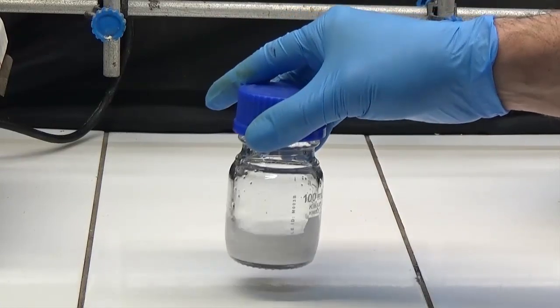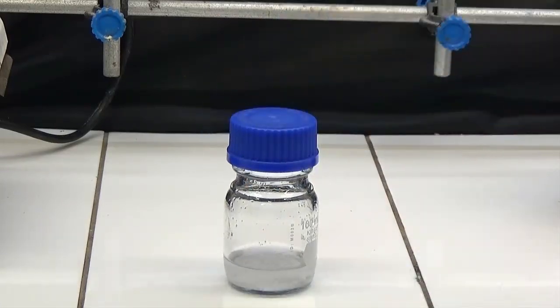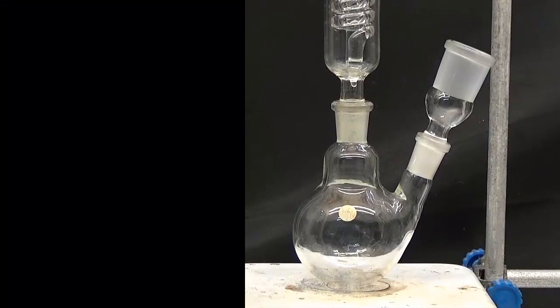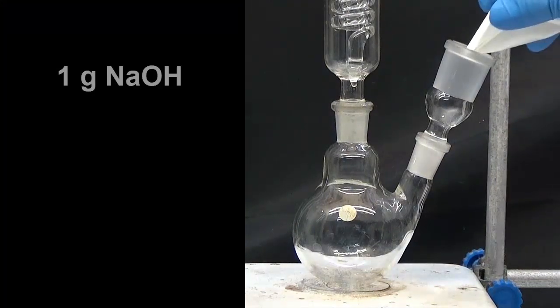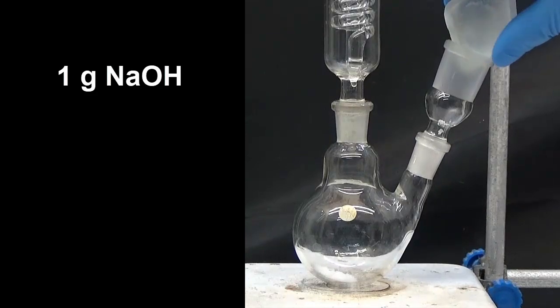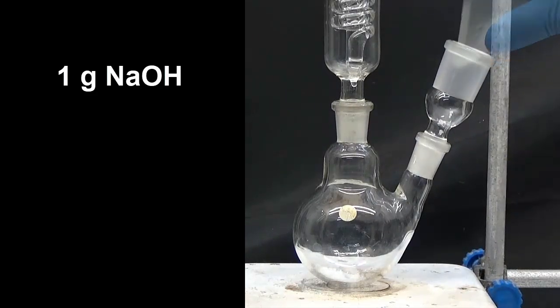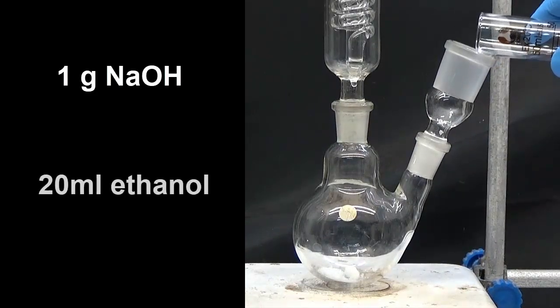With all the prepared reagents, we're going to synthesize phenacetin. In a 100 ml flask with reflux condenser, we put 1 gram of sodium hydroxide and 20 ml ethanol.